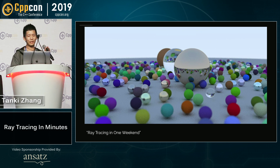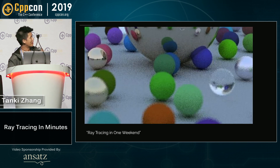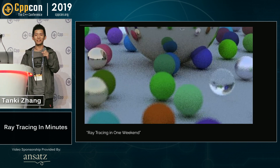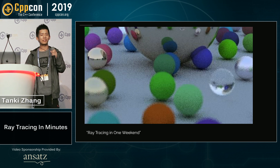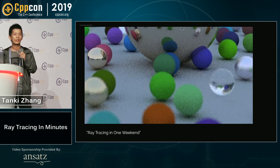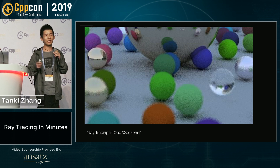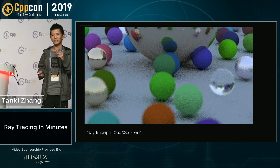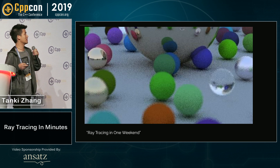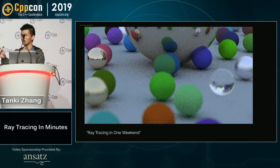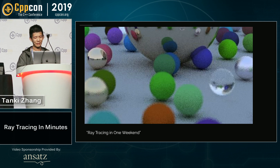This looks pretty nice, except if we try to zoom in — here's the problem. Why is it super noisy? Well, this is because we use Monte Carlo integration, which means we need to take sufficient samples. But it's very hard to decide whether the number is sufficient. If it's not sufficient, we get something like this, which is actually pretty bad already.